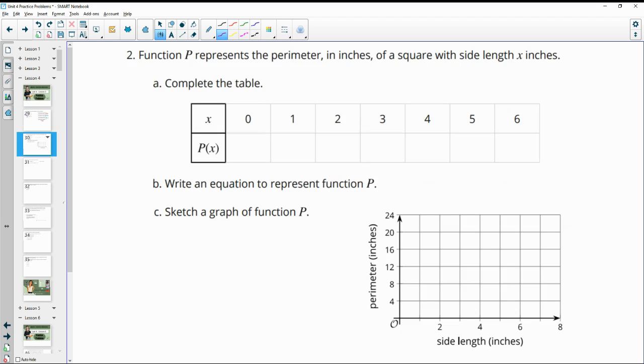Number two, function P represents the perimeter in inches of a square with side length x. Complete the table. So here we have a square, and on a square, all the sides are exactly the same. And remember, perimeter means add all the sides. So if we have four sides and they're all 0, then the perimeter would be 0. If all four of our sides are 1s, we would do 1 plus 1 plus 1 plus 1, that would give us 4. If they were 2s, it would be 2 plus 2 plus 2 plus 2, which is 8.